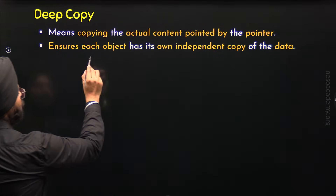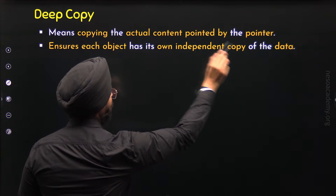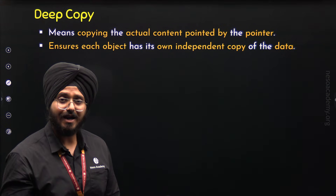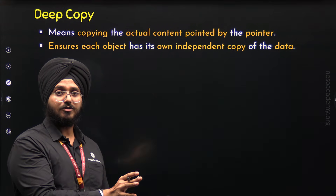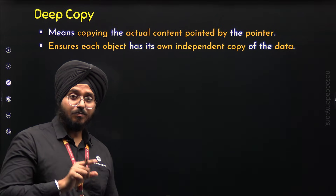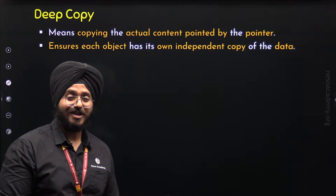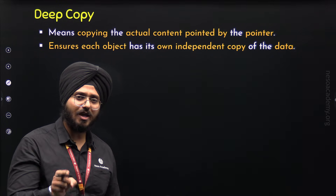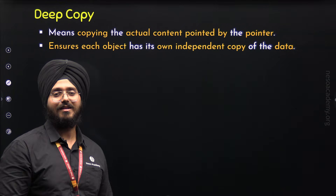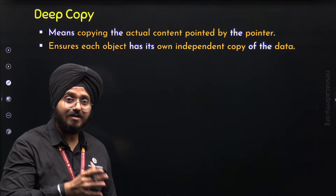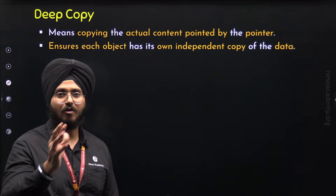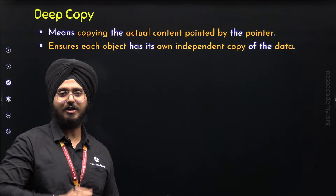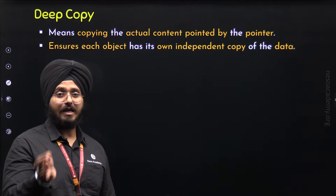Deep Copy ensures that each object has its own independent copy of the data. This is not the case in shallow copy. In case of shallow copy, we copy the address stored in the pointer to another pointer of another object. This means both pointers point to the same memory location. If we make any change via one object to that memory location, that change will be reflected in the other object as well. Because of this, objects are dependent on each other and do not get independent copies of the data. So in case of shallow copy, we do not create true copies of the objects. This can be resolved with the help of Deep Copy.